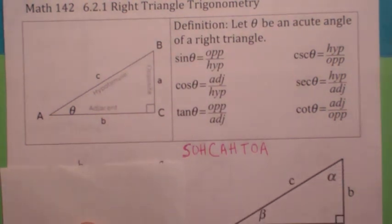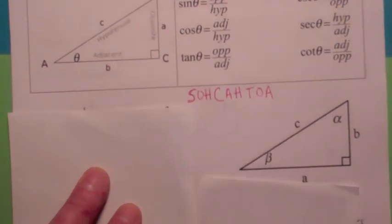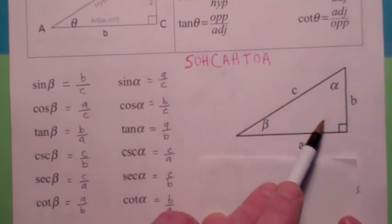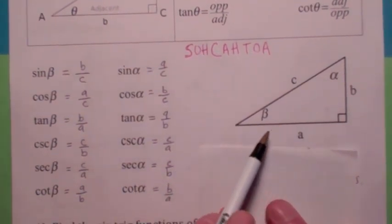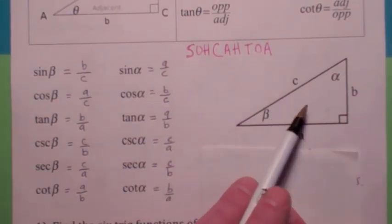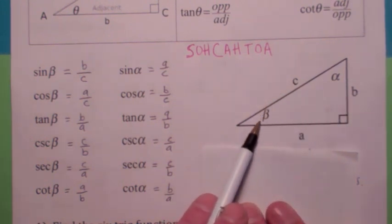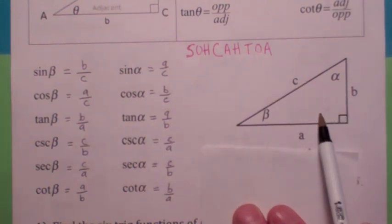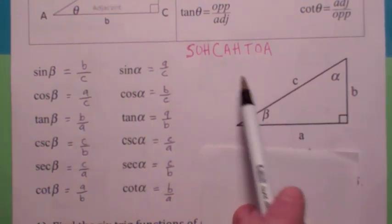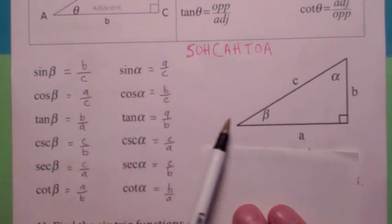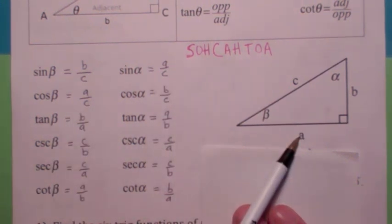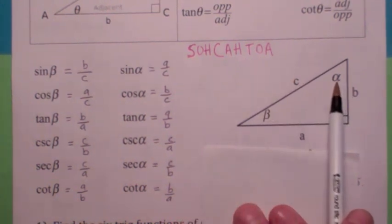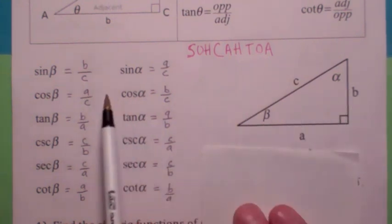It makes a huge difference which angle you're talking about on your right triangle. Similarly, the trig functions of beta are not going to be the same as the trig functions of alpha. For example, the sine of beta would be the side opposite beta divided by the hypotenuse — b over c. But the sine of alpha would be the side opposite alpha divided by the hypotenuse — a over c. The cosine of beta would be the side adjacent to beta over hypotenuse — a over c. But the cosine of alpha would be the side adjacent to alpha over hypotenuse — b over c.